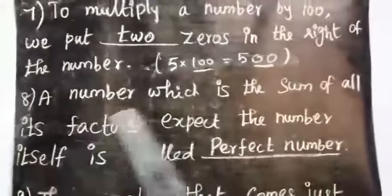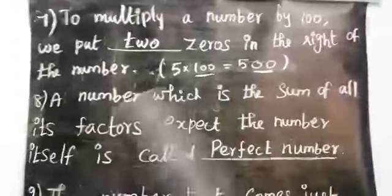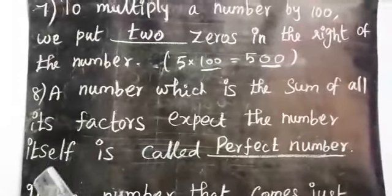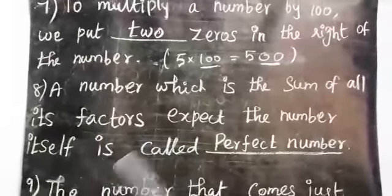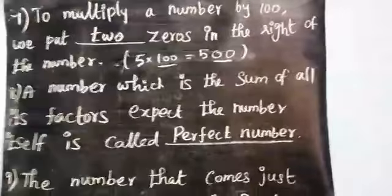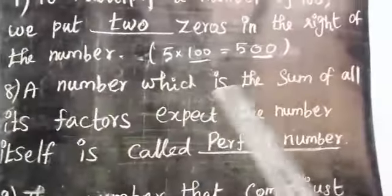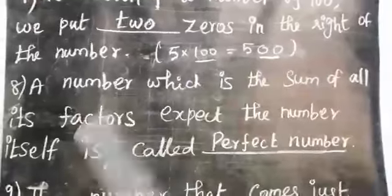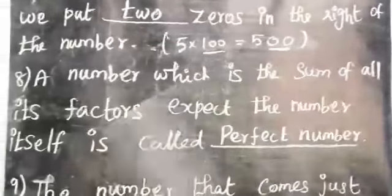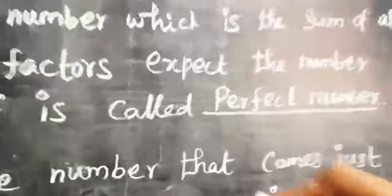Eighth one: a number which is the sum of all its factors, except the number itself, is called a perfect number.